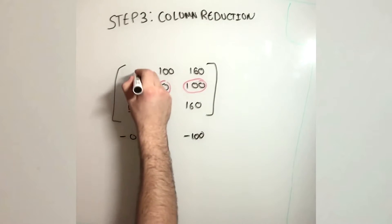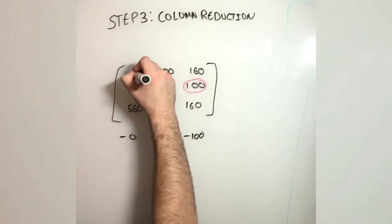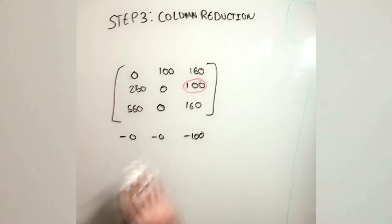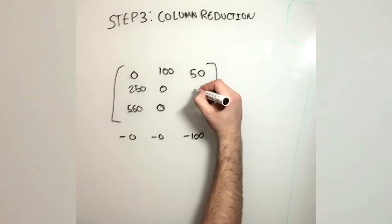So the lowest numbers are currently circled. So we subtract the first two columns by 0, hence it stays the same. However, the last column we subtracted by 100.